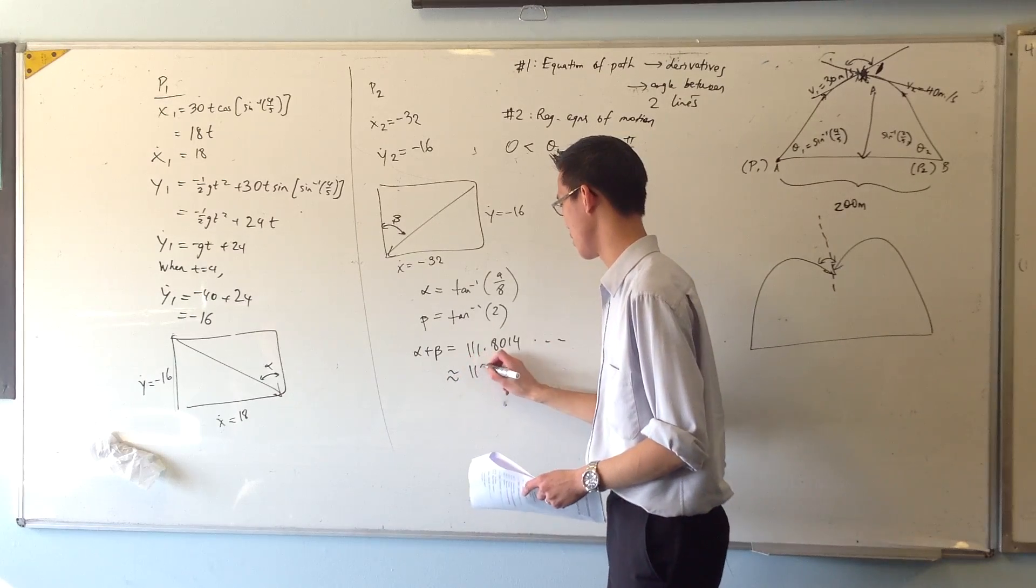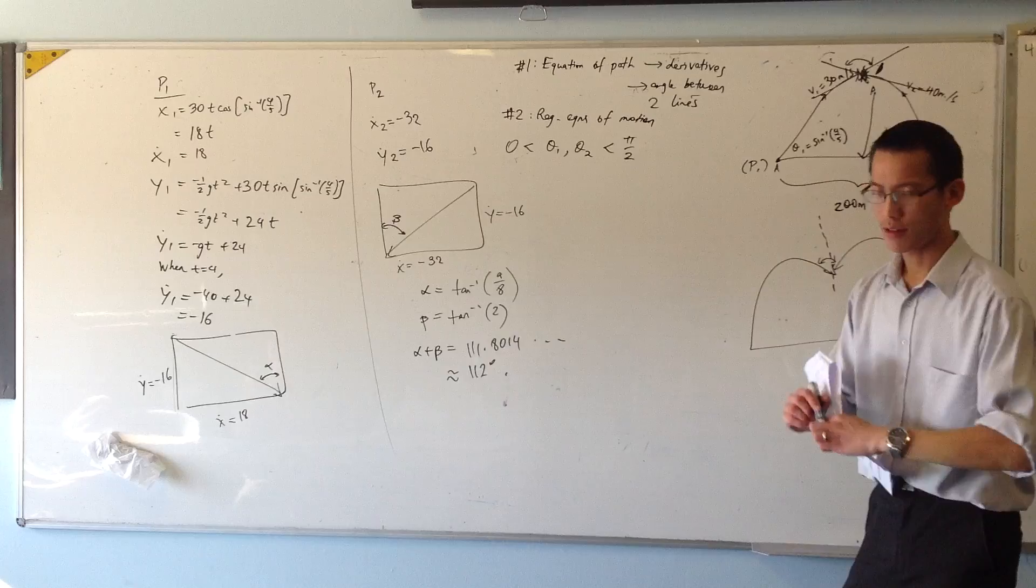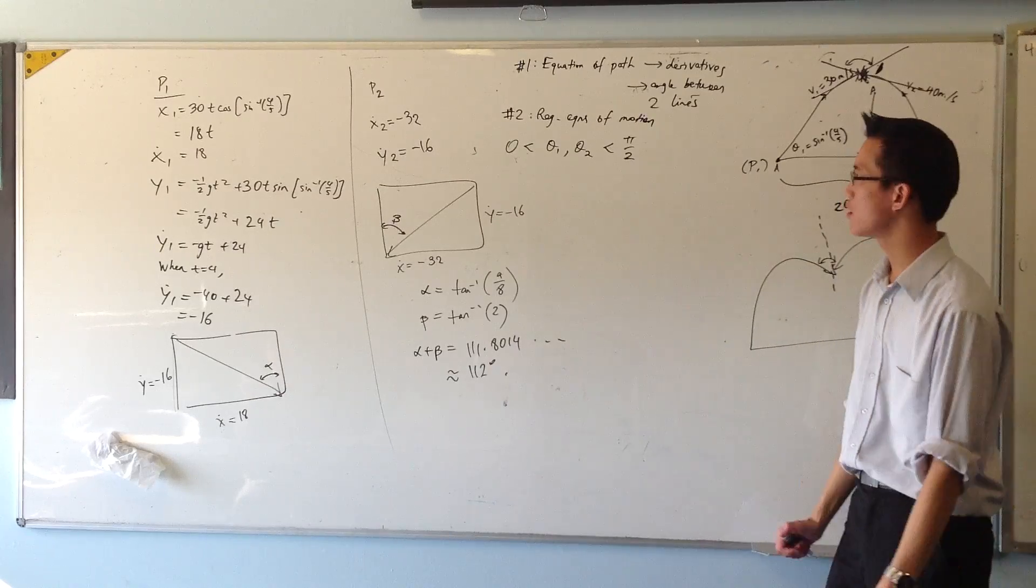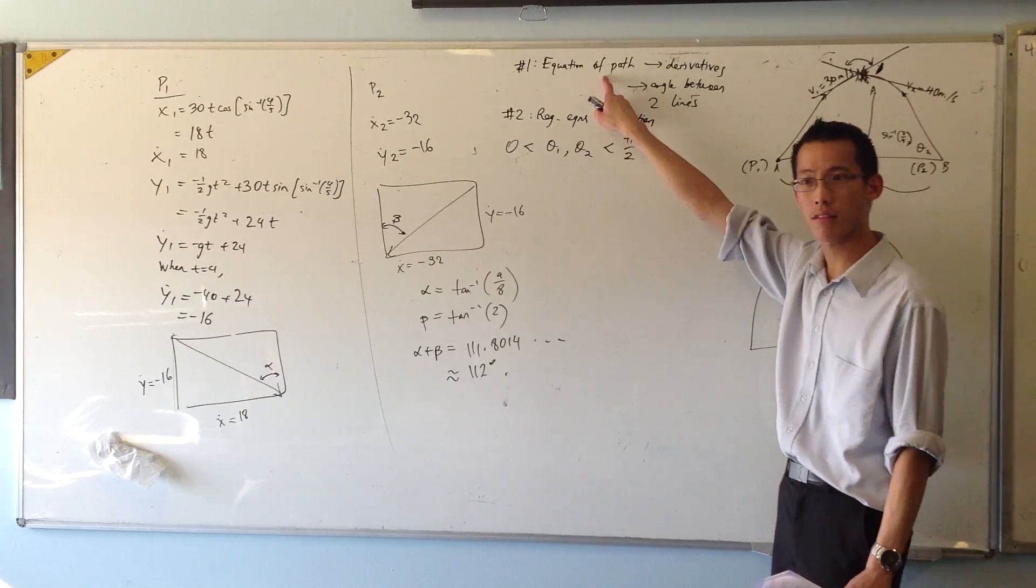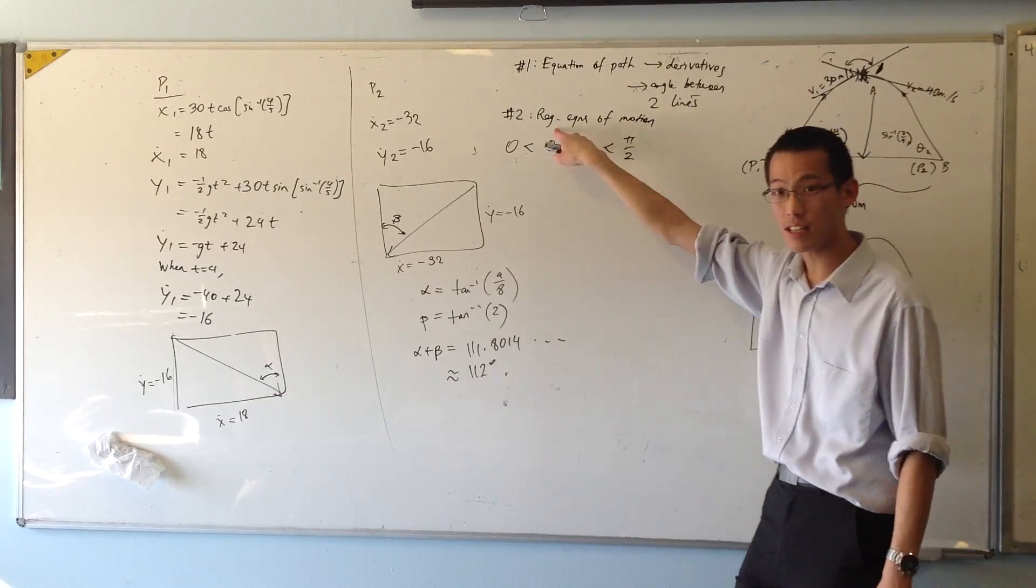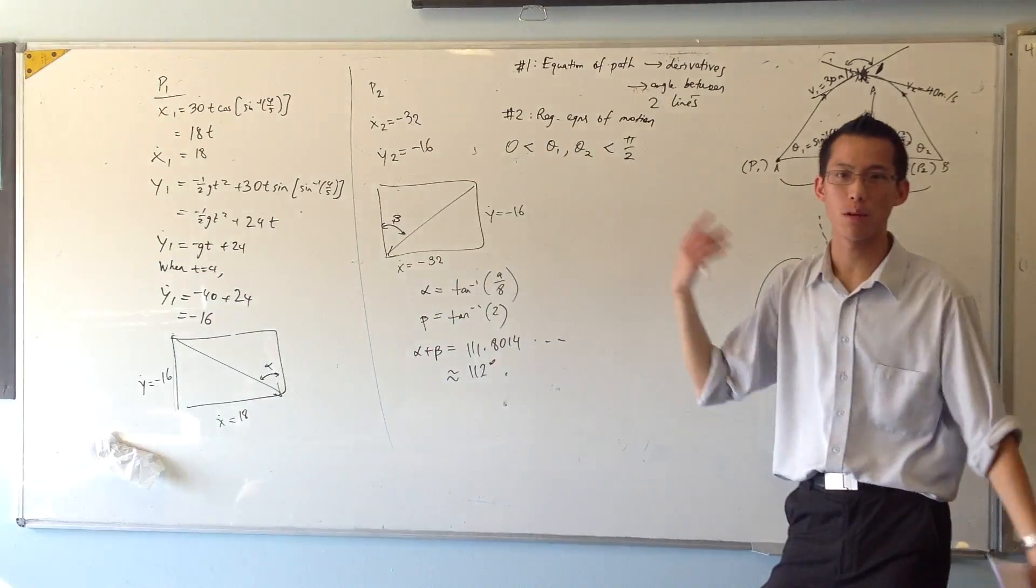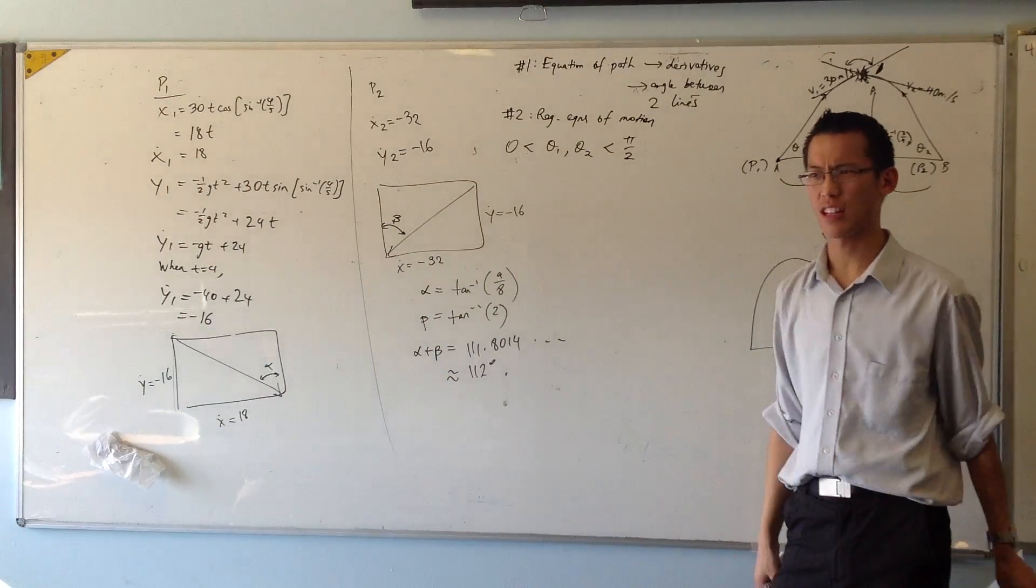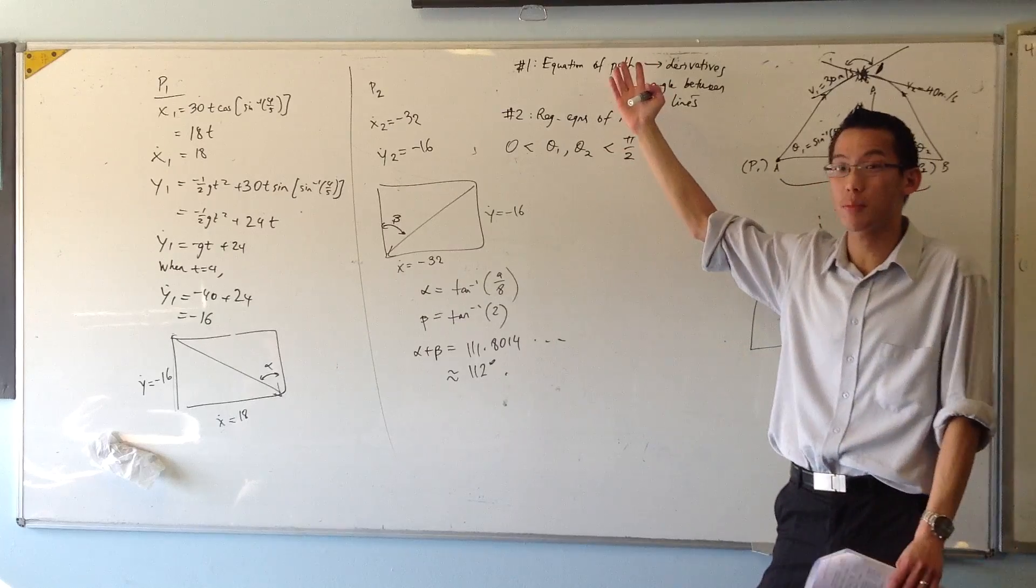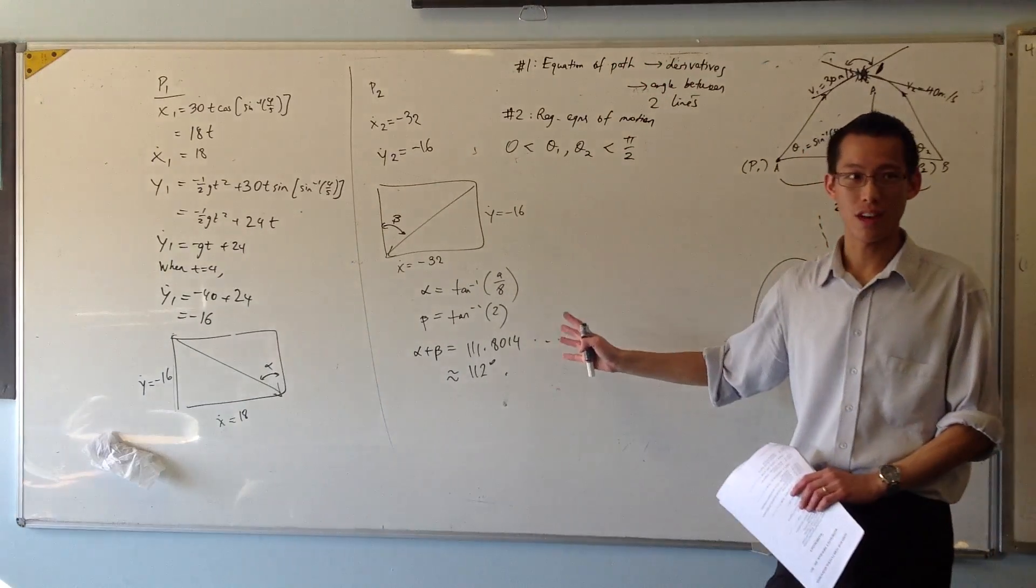And they just want it to the nearest degree. So I just want to leave it up to you whether you decide, do you want to go equation of path and then use the derivatives and then use angle between two lines, or do you want to just use these equations, use those derivatives and then just add them up with the rectangles? I think they're both kind of equivalent. Depends on how the question gets set up for you. Whether you already know the equation of the path, that would save you a lot of time. But that's the way I approach that question.